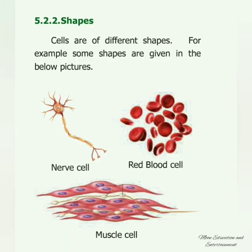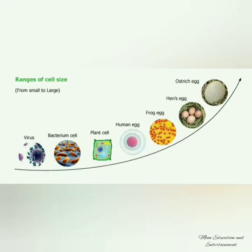Shapes: Cells are of different shapes. Look at the picture — the nerve cell, the red blood cell, and the muscle cell. Each and every cell has its unique shape. The cell size ranges from small to large. The smallest cell size is a virus, followed by a bacterium cell, plant cell, human egg, frog egg, hen's egg, and finally the ostrich egg. This is how cells are arranged from small to large.